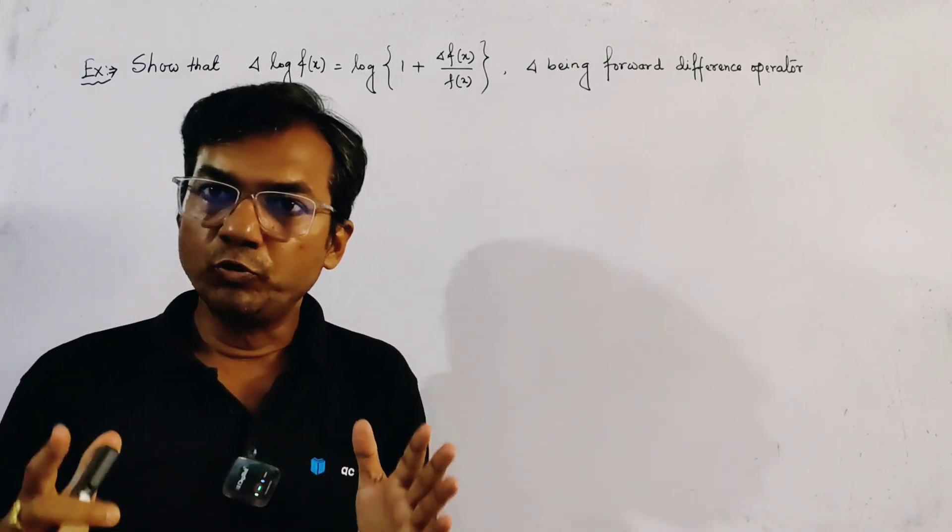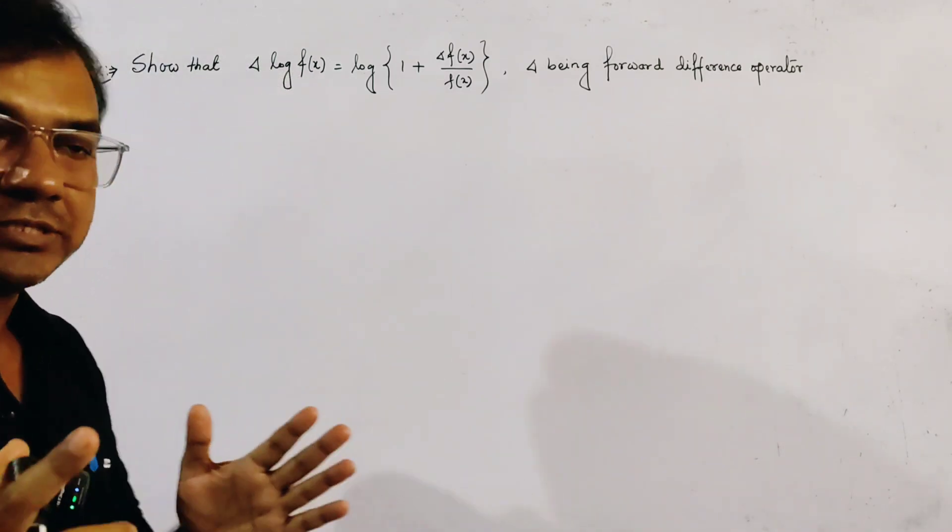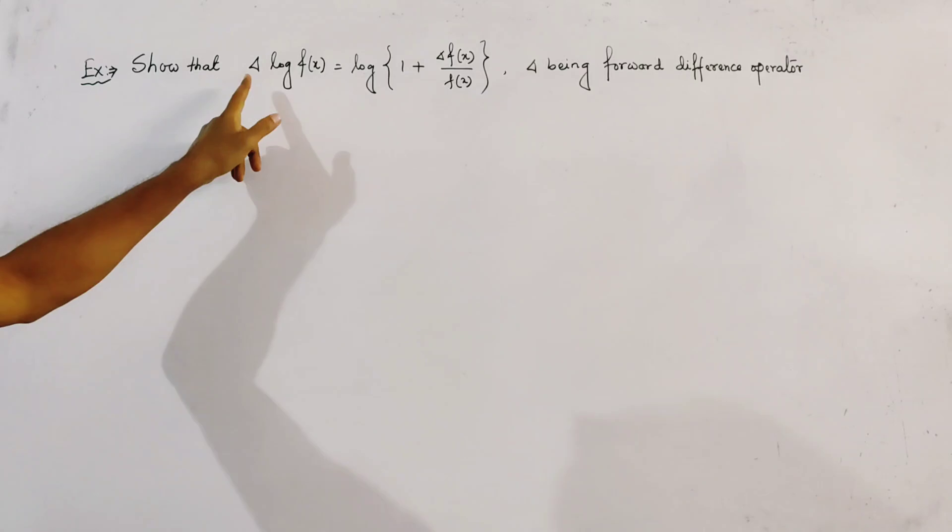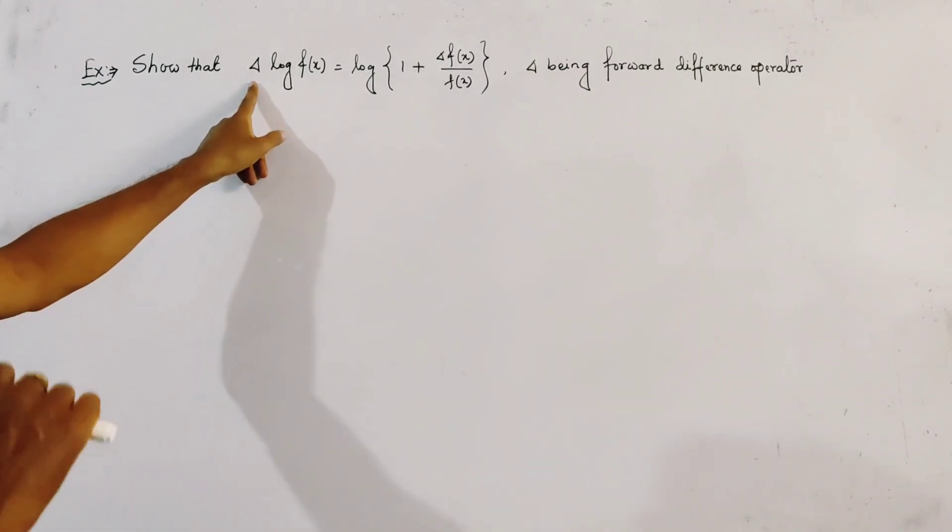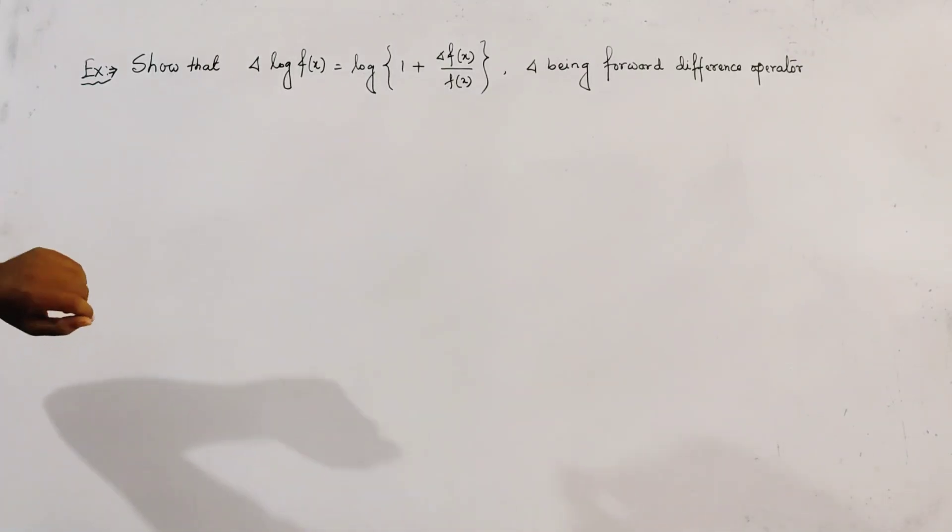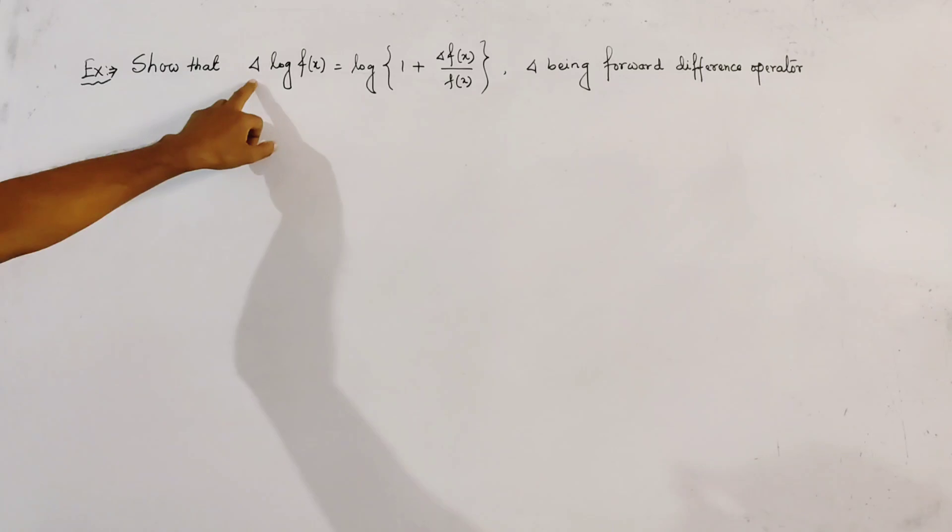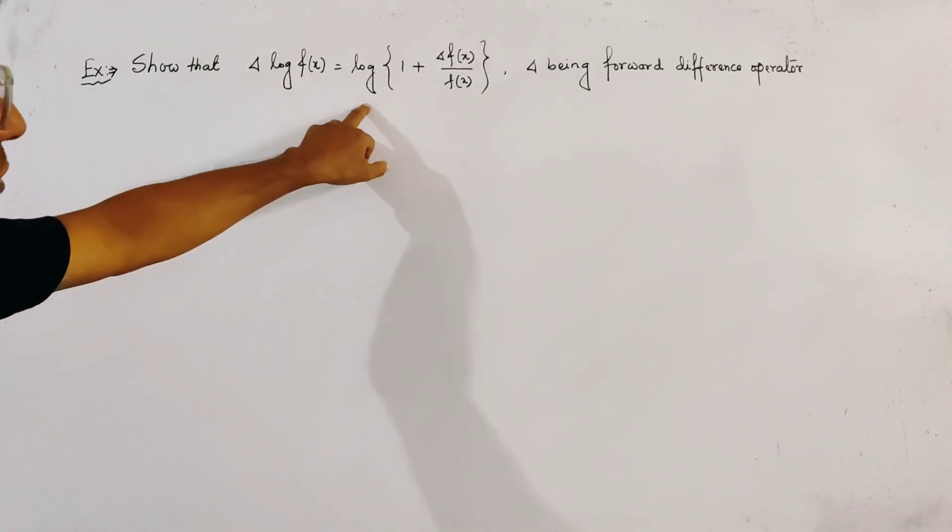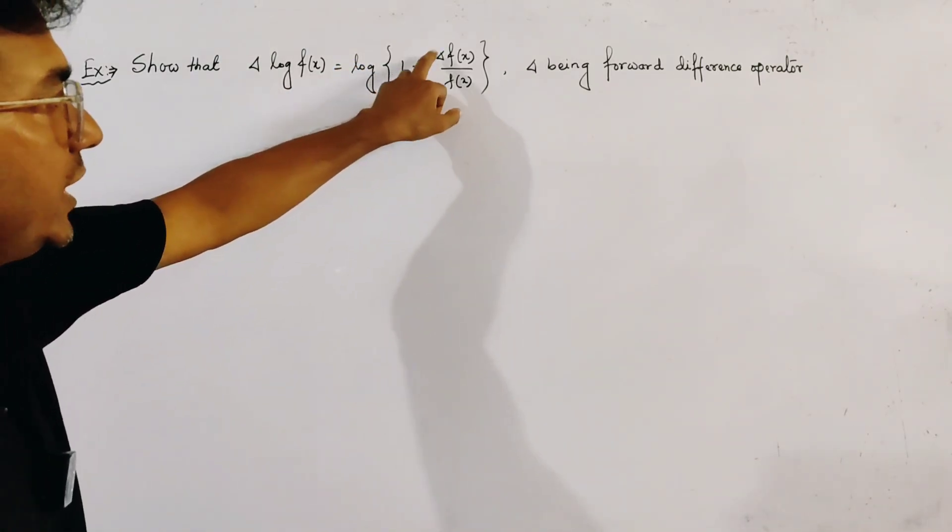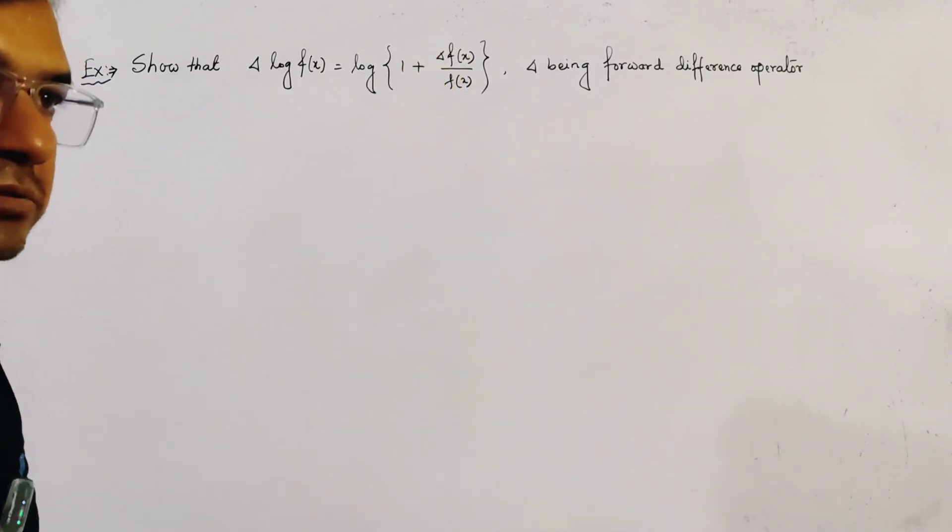In this lecture, we prove an important relation of forward difference operator delta, which is that delta log of f of x is equal to log of 1 plus delta f of x by f of x.